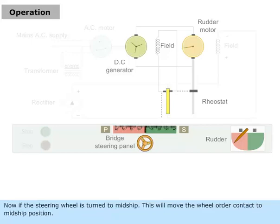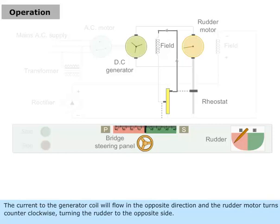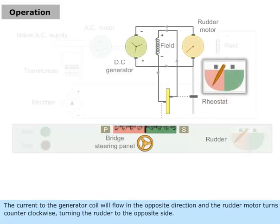Now, if the steering wheel is turned to mid-ship, this will move the wheel order contact to mid-ship position. The current to the generator coil will flow in the opposite direction, and the rudder motor turns counter-clockwise, turning the rudder to the opposite side.